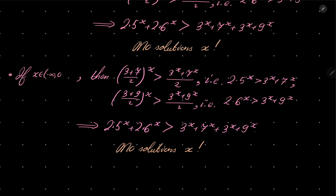If x is in minus infinity to 0, union 1 to infinity, then we have exactly the same but the inequalities are reversed — again by Jensen's inequality. Again, no solutions.